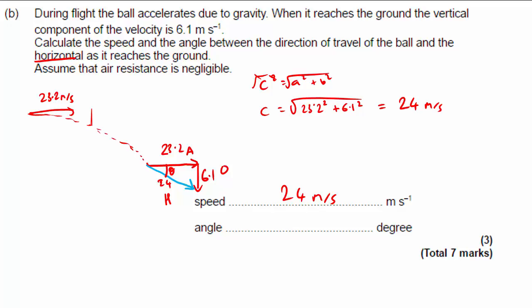Tan theta equals opposite over adjacent. The opposite is 6.1 divided by the adjacent which is 23.2. Calculating this ratio and then taking the inverse of tan to get rid of the tan, to get the angle on its own.